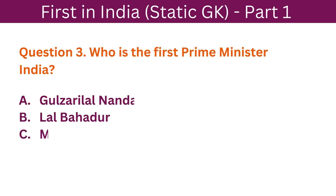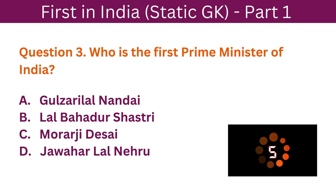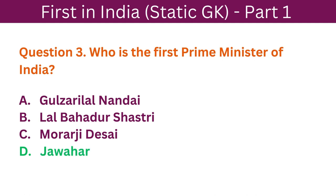Question 3: Who is the first Prime Minister of India? A. Gulzari Lal Nanda. B. Lal Bahadur Shastri. C. Morarji Desai. D. Jawahar Lal Nehru. The correct answer is D. Jawahar Lal Nehru.